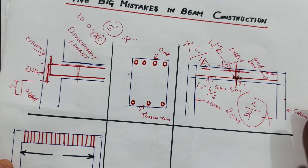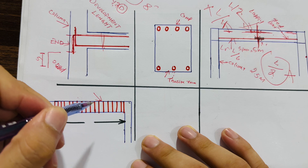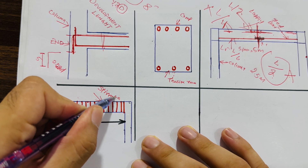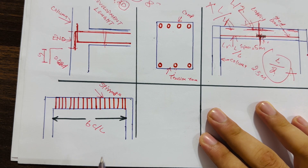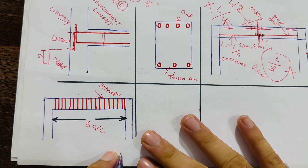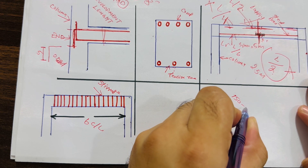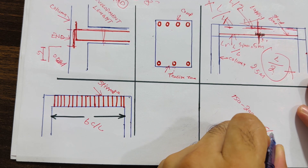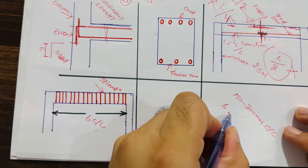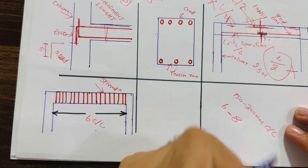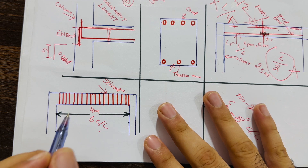The fourth mistake is providing stirrups at uniform spacing throughout the beam. For example, don't provide six inches center-to-center spacing uniformly across the entire beam. Instead, vary the spacing. In the middle portion, you can provide 150 to 200 millimeters center-to-center, which is approximately six to eight inches.